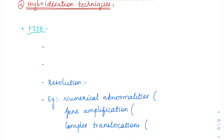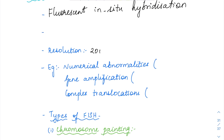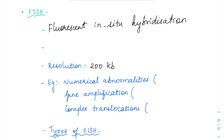So the first hybridization technique is FISH — fluorescent in-situ hybridization. As the name suggests, there is usage of fluorescent dyes, and you are going to visualize it under the fluorescent microscope. The resolution is going to be 200 kilobases. For FISH to be used, you will have to know the target gene — the exact location of the target gene has to be known. If it is unknown, you cannot use FISH.